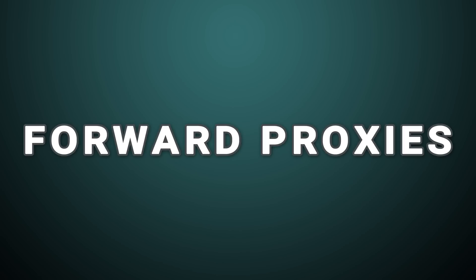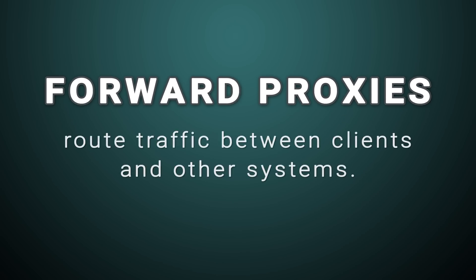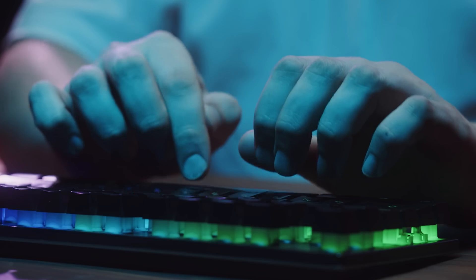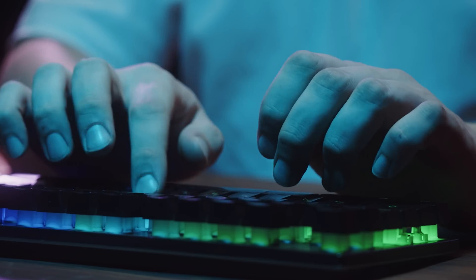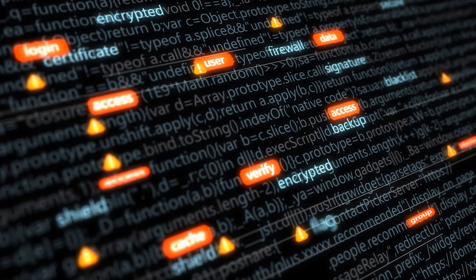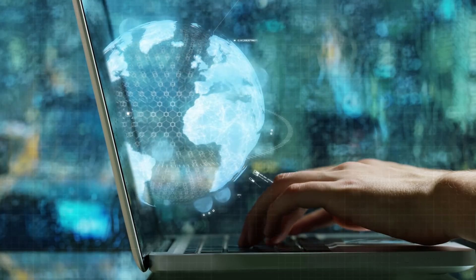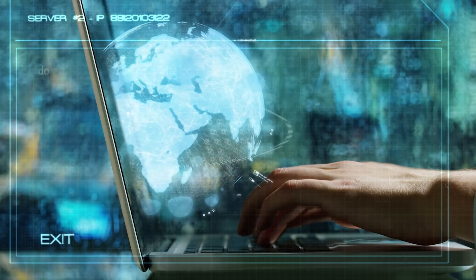First up, forward proxies. Forward proxies are deployed in any number of ways, but primarily to route traffic between clients and other systems. They can be deployed in different locations including the client side, the server side, or at the network perimeter. They can be used to filter traffic, block malicious traffic, or redirect traffic to specific destinations.